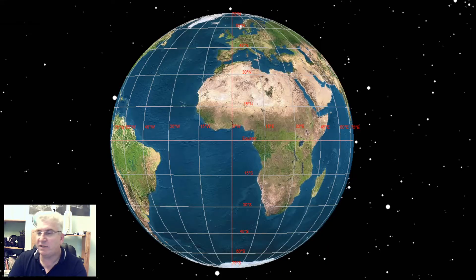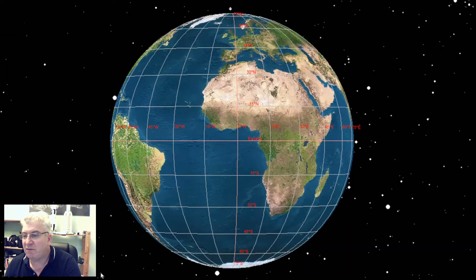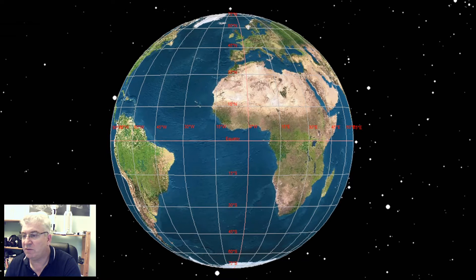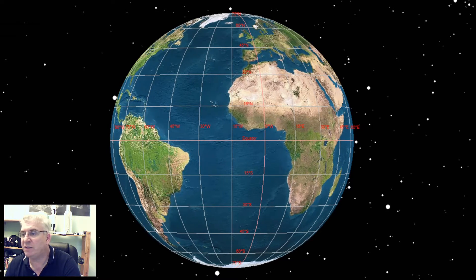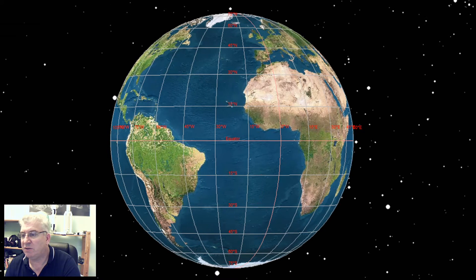Now we know that the Earth rotates and the direction of that rotation is towards the east. So here I have a graphic of the Earth rotating. You can see every point is moving towards the east. That's the direction of rotation.